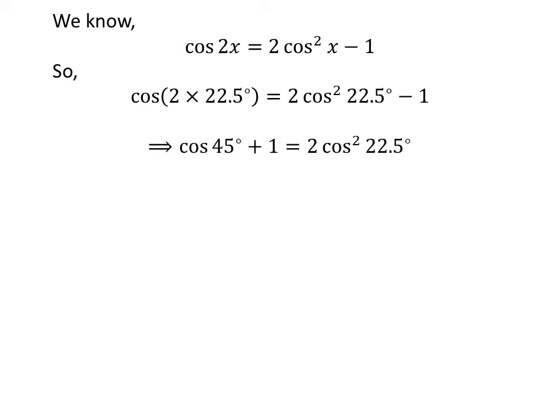We know 2 times 22.5 degrees is equal to 45 degrees, and shifting minus 1 from left hand side to right hand side gives us cosine of 45 degrees plus 1 is equal to 2 times square of cosine of 22.5 degrees.